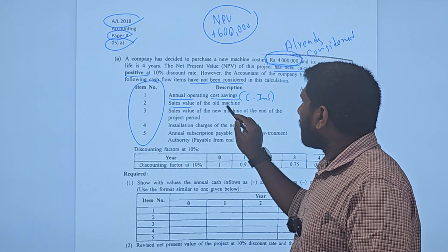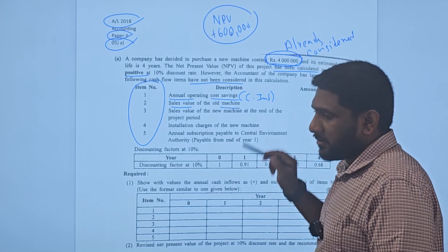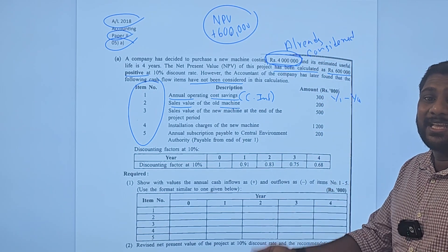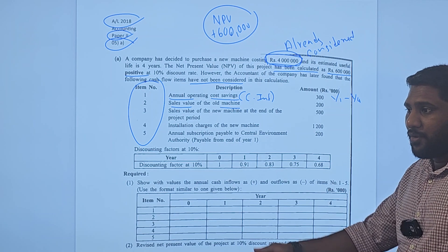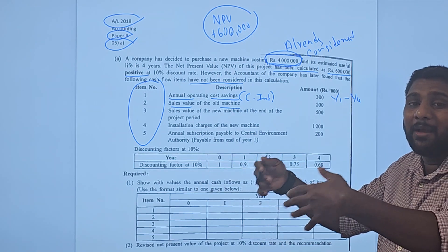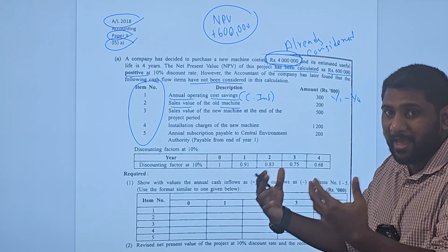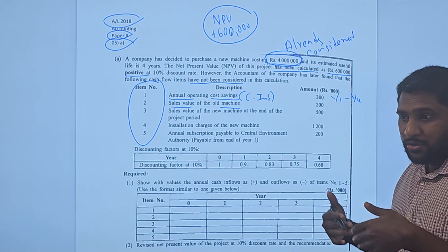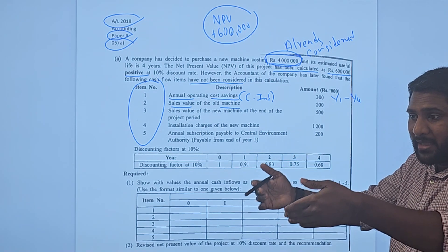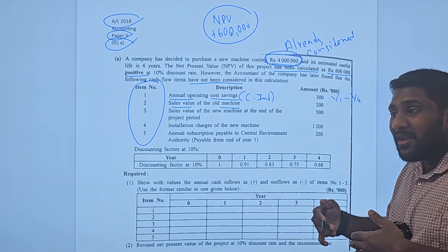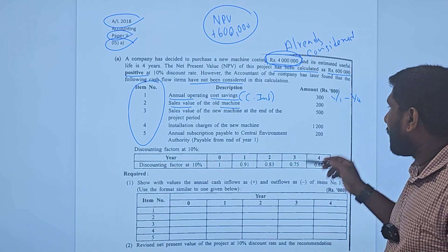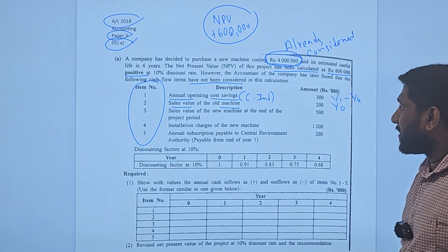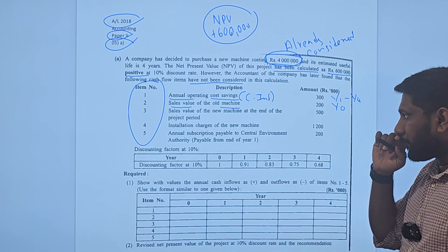Sale of old machine: if you are buying the new machine, you can sell the old asset. Selling the old machine means cash is coming in — it's a cash inflow. If I am buying the new asset today, I will sell the old asset today itself, so it's a cash inflow for Year 0.